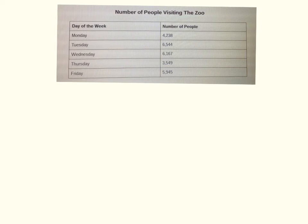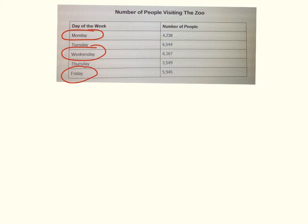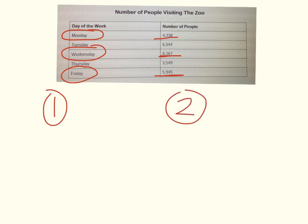Alright, this is our last skill that we're going to introduce today. This skill is going to involve us looking at a data table to do some addition problems. This data table gives us information about the number of people visiting the zoo and the day of the week. The question — which isn't going to be written down, so listen closely — is: what is the total number of people who visited the zoo on Monday, Wednesday, and Friday? We're going to have to use three numbers for this calculation, and I'm going to do this in two steps. So my first step, we're going to take 4,238 people who came on Monday and 6,167 people who came on Wednesday, and find the total.